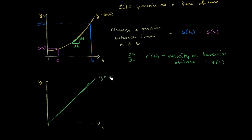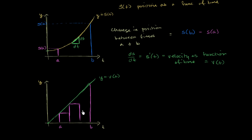Using this graph of y equals v of t, let's think about whether we can conceptualize the change in position between time a and time b. Let's go back to our Riemann sums. Let's think about what the area of a very small rectangle would represent. Let's divide this into a bunch of rectangles — I'll do a fairly large one so we have space to work with, but you can imagine much smaller ones. I'm going to do a left Riemann sum, though we could do a right Riemann sum or a trapezoidal sum.